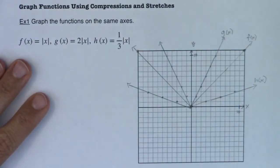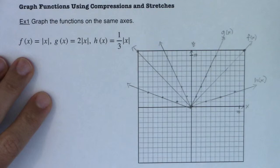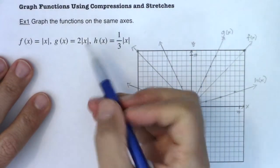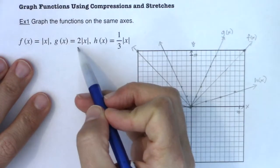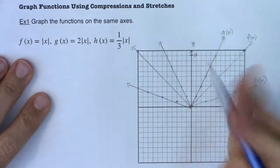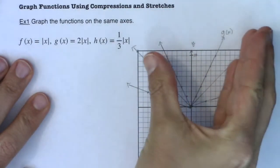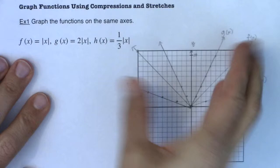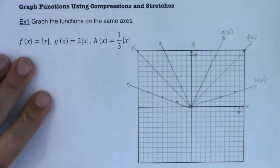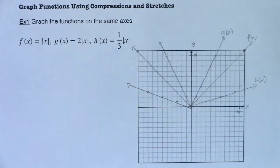Alright, so we've got our three functions graphed. We've used our calculator. We've used the table function in our graphing calculator. And I just want you to see how these coefficients affected the shape of your graph, right? This guy, when we did double absolute value of x, our v got skinnier, right? But when we did a third, it got, I would say, wider. You could say fatter and skinnier or narrower and wider. But those are pretty much the adjectives we use.